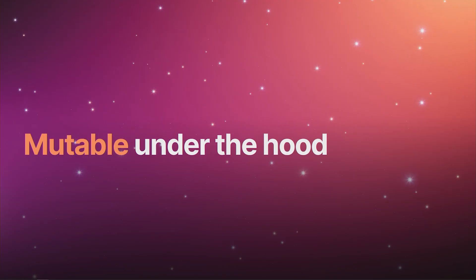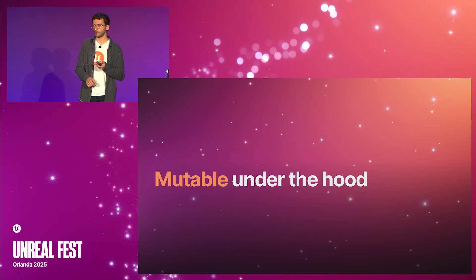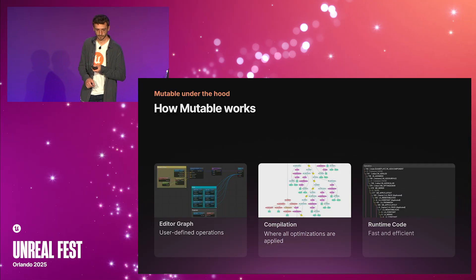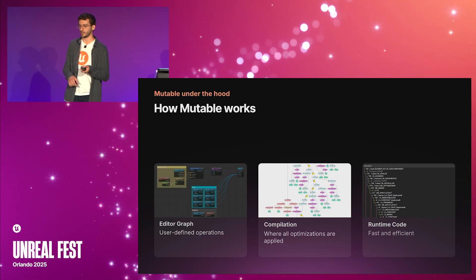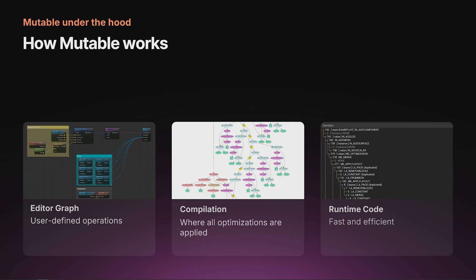So far we've seen what Mutable can do, but how does it work? Developers define a set of operations through the customizable object graph. Then the graph, meshes, and textures get compiled, and during this process a set of optimizations are applied.